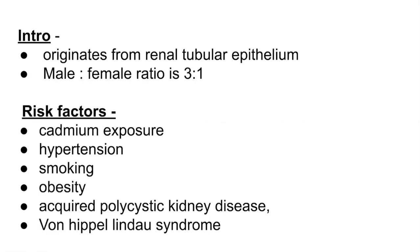Renal cell carcinoma originates from the renal tubular epithelium and is most commonly seen in males rather than females, with a male to female ratio of 3 to 1. Risk factors include cadmium exposure, hypertension, smoking, obesity, and predisposing conditions like acquired polycystic kidney disease and von Hippel-Landau syndrome.